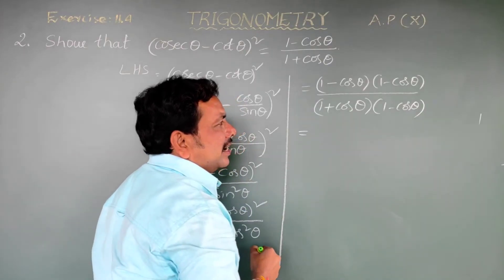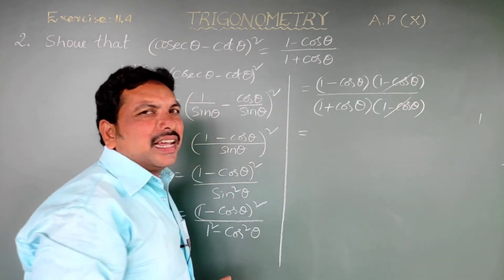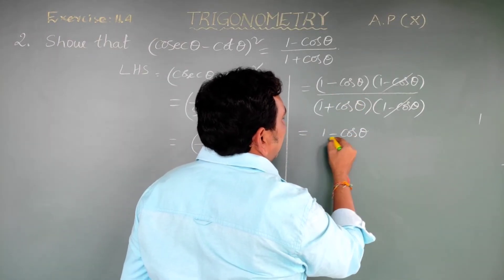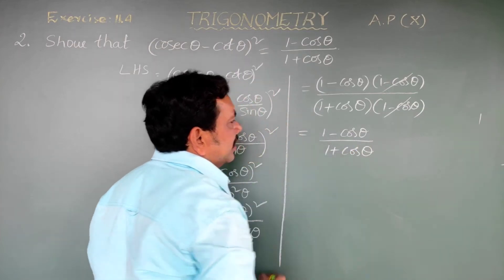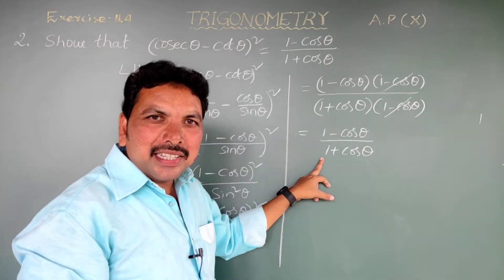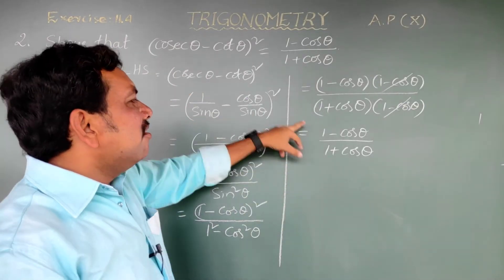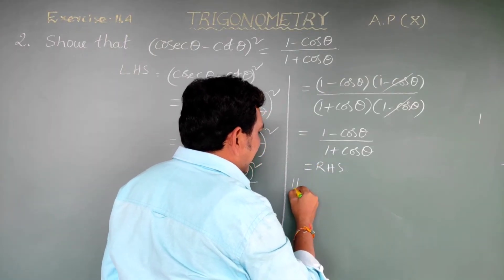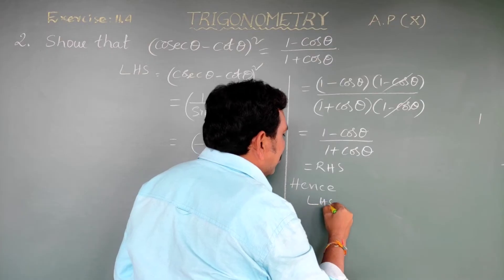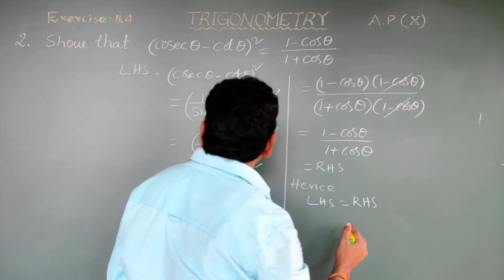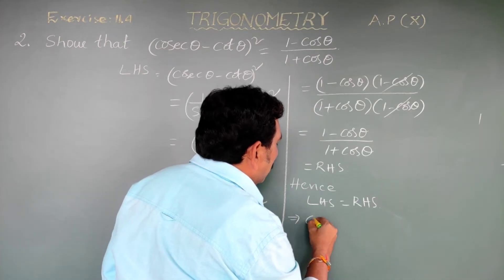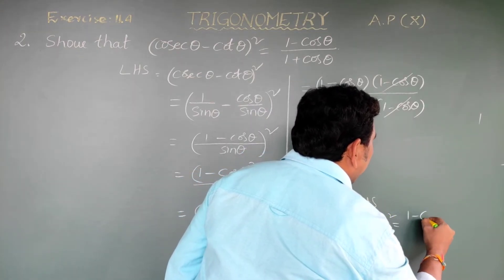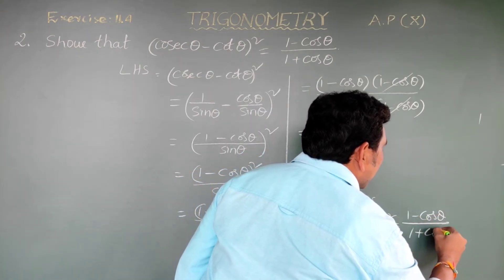In the numerator and denominator, (1 - cos theta) cancels, leaving (1 - cos theta)/(1 + cos theta), which is the RHS. Hence LHS equals RHS, so (cosec theta - cot theta)² equals (1 - cos theta)/(1 + cos theta).